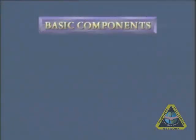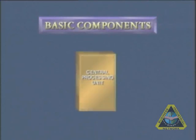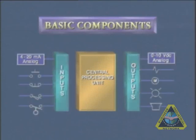A programmable controller is composed of two basic sections. The first one is the central processing unit, or CPU, as it's commonly referred to, while the second one is composed of the input and output section, or the so-called I/O system.